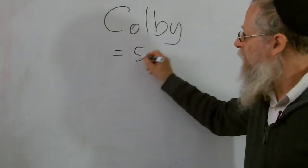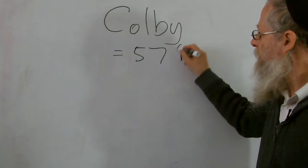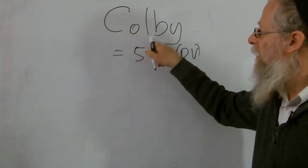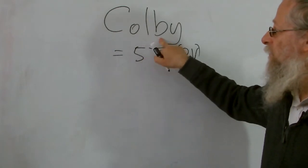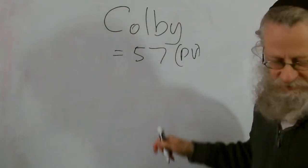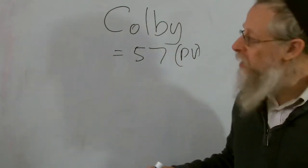He equals 57 in the placement value, the PV. That is C is 3, O is the 15th letter, L is the 12th, B is 2, and Y is the 25th letter. So add that to get 57.